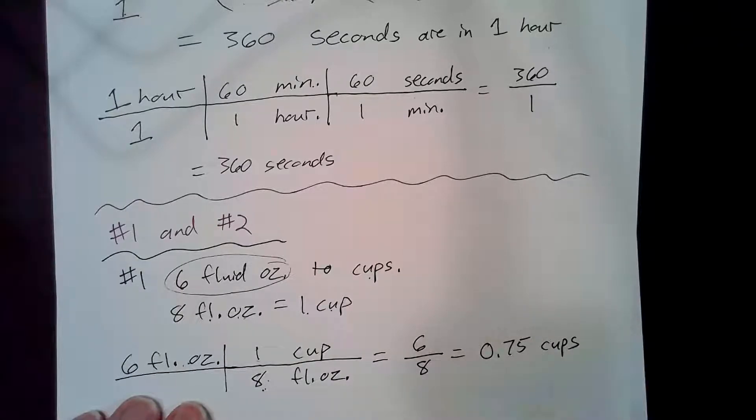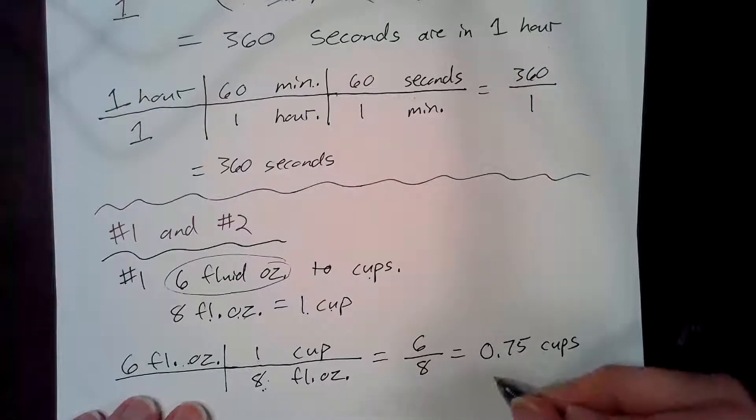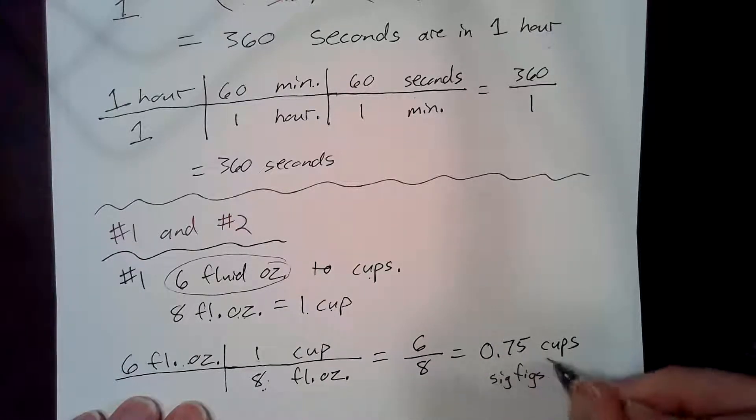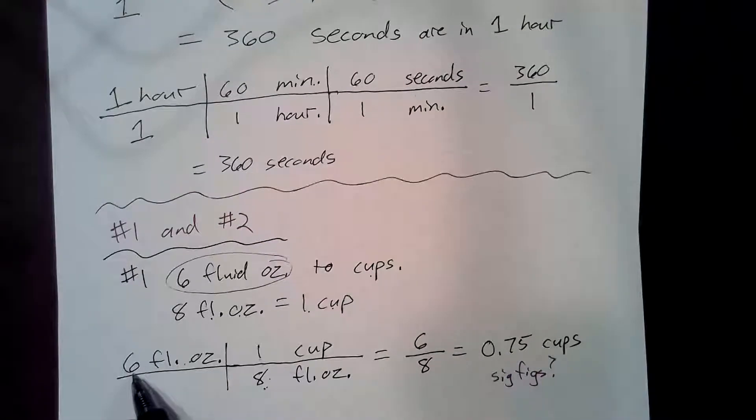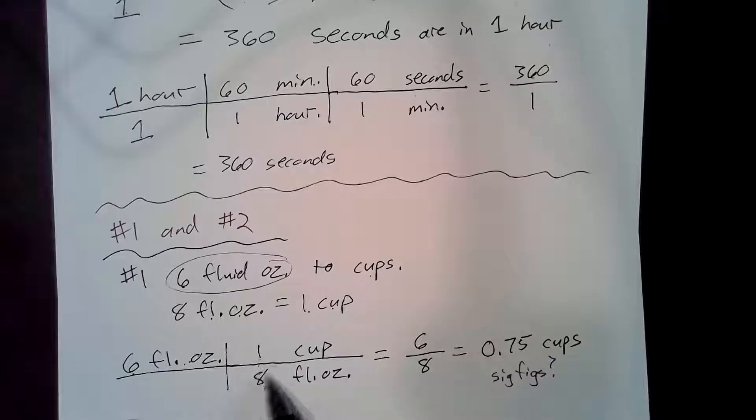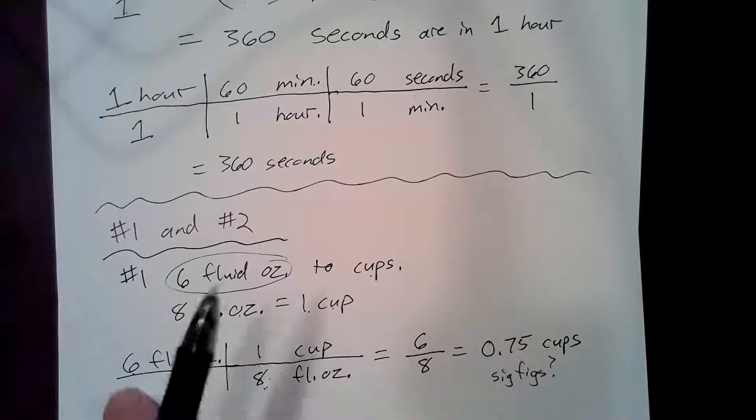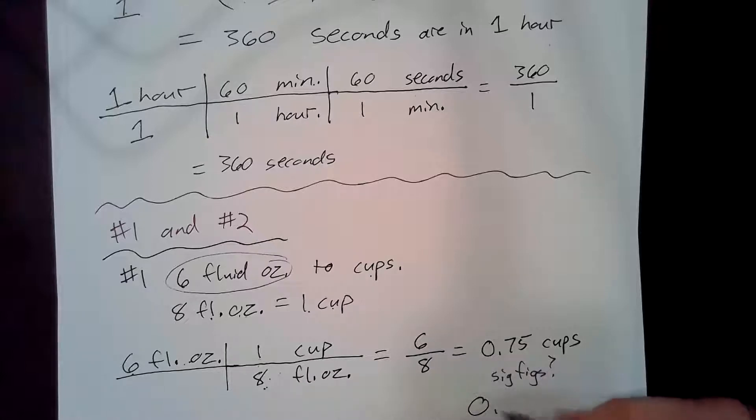So does that make sense and does that have the correct number of sig figs? It does not. We started with one significant figure. I don't care about the sig figs that are in the conversion factor because those are exact numbers. There's one sig fig that I started with so I need to end with one sig fig here. So I'm going to round to 0.8 cups.